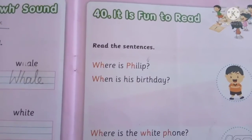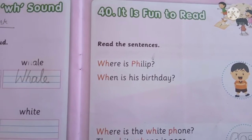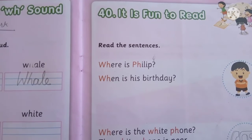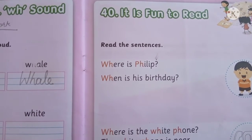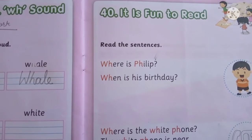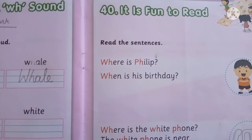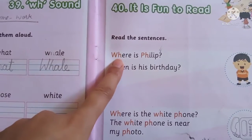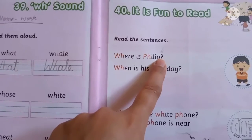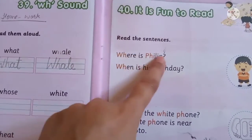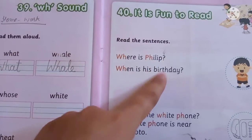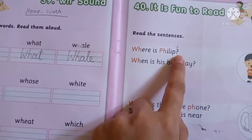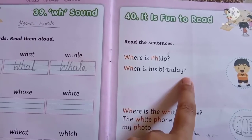So, read the sentences. मैं sentence पढ़ रही हूँ, आप listen carefully. Where is Flip? When is his birthday? अब देखो बच्चों, यहाँ पर जो WH words आ रहे हैं वो क्या हैं — यहाँ पर question mark आ रहा है. तो आपको यह ध्यान रखना है कि हमेशा जो WH words होते हैं वो हमेशा question mark words होते हैं — उनमें question पूछा जाता है. तो यहाँ 'where' use किया है तो पीछे question mark लगाया है, और यहाँ 'when' का use किया है तो पीछे भी question mark आ गया.